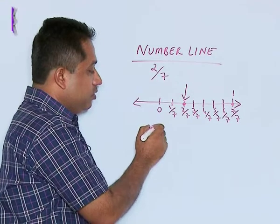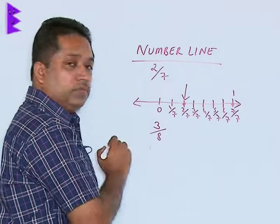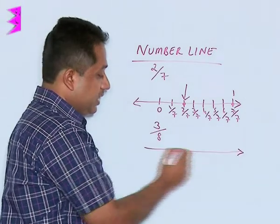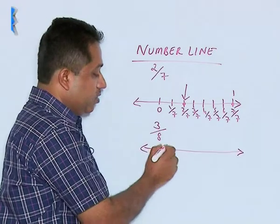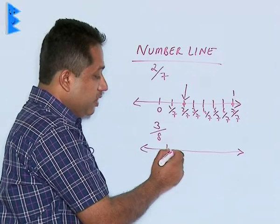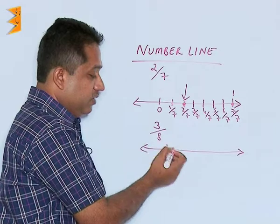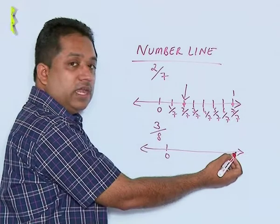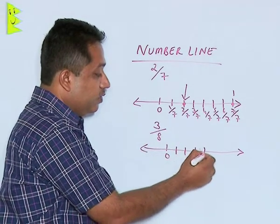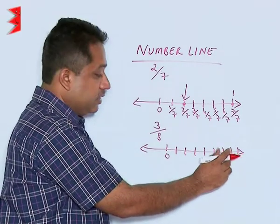Similarly, if we have to plot 3 by 8, again it is a positive number, so it will lie on the right side of 0. We look at the denominator, which is 8, and divide the space between 0 and 1 into 8 equal parts.